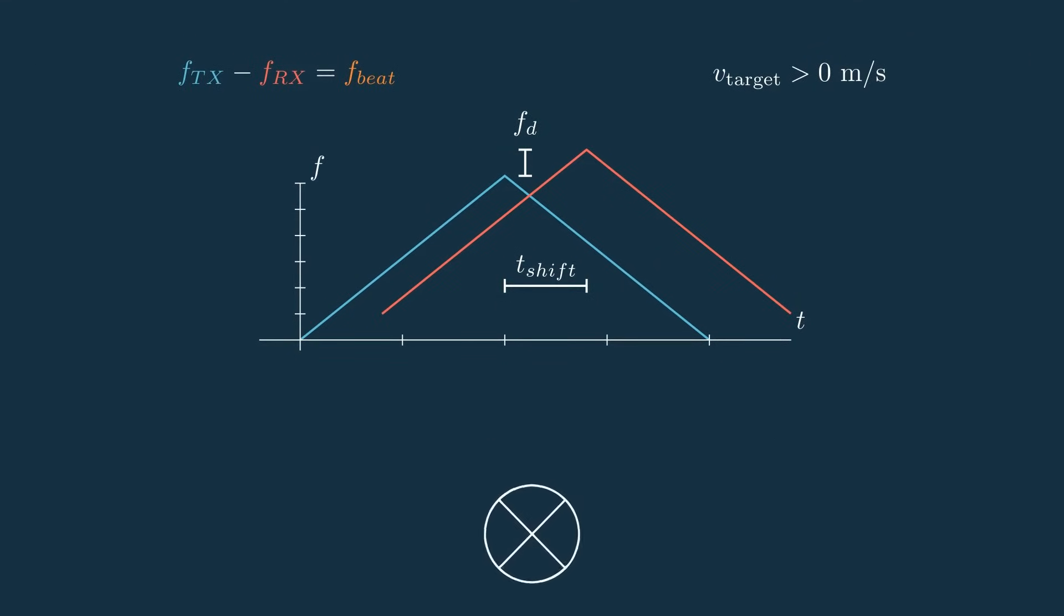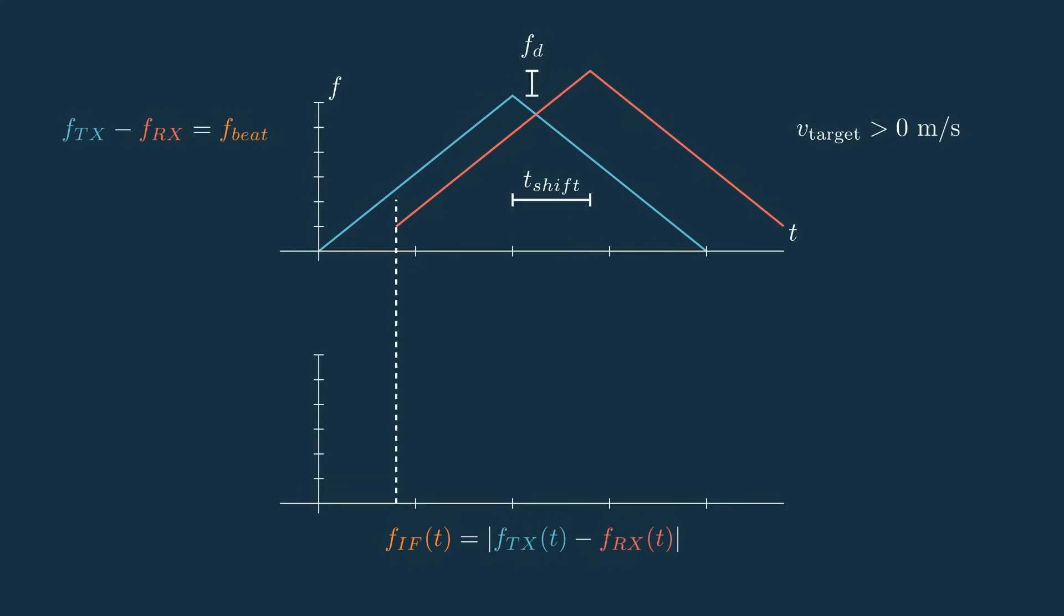Remember that once we receive the reflection from the target, we then take these two signals and send them through a mixer to get the difference of the two. And here's where it gets really interesting. For this first section where the Rx frequency plot is below the Tx, the difference is the frequency from the horizontal shift minus the frequency from the vertical shift, or in other words, the beat frequency minus the Doppler frequency. Then there's this little transition period where the difference drops to zero while the two plots cross. And then we have the section where Rx is above Tx. And this is made up of the horizontal shift and the vertical shift, or the beat frequency plus the Doppler frequency.